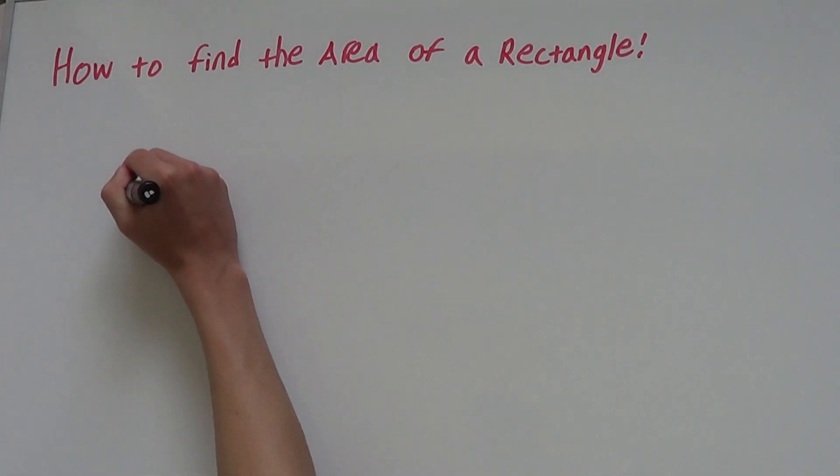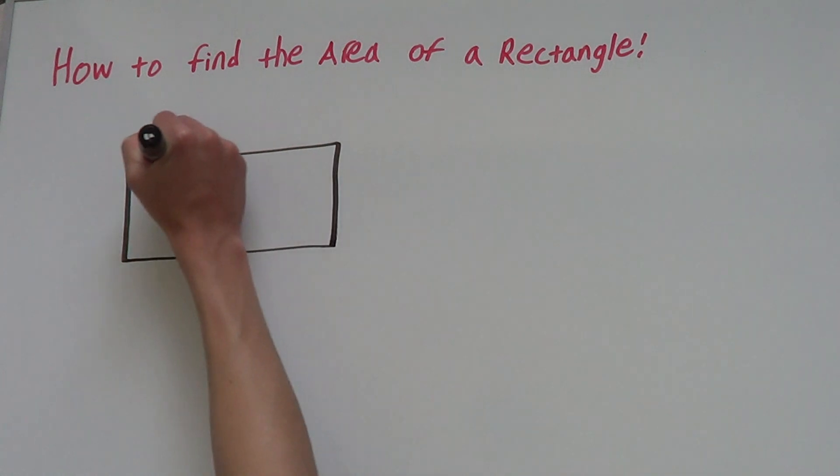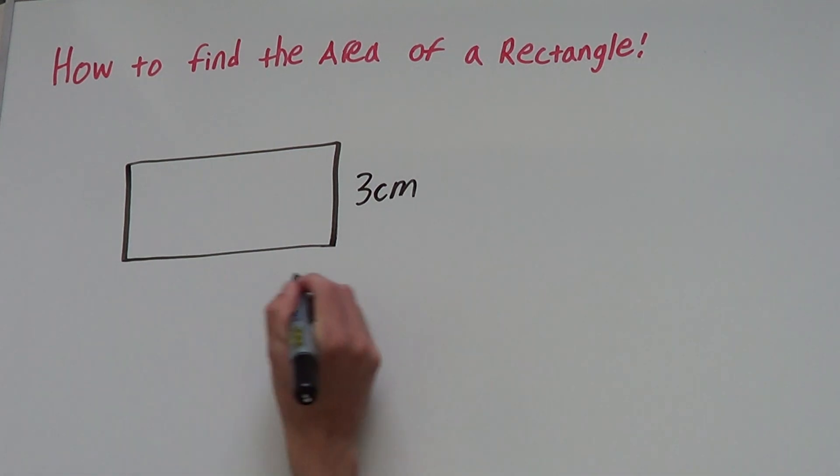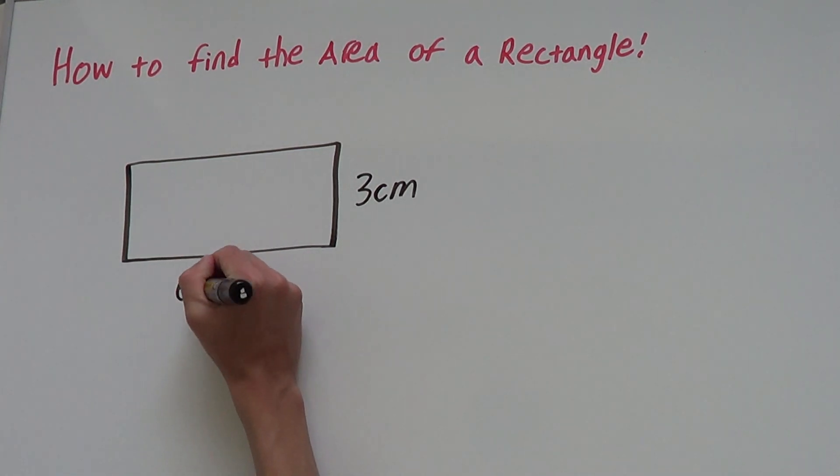Let's say we have a rectangle that looks like this and it has a width of 3 centimeters and a length of 6 centimeters.